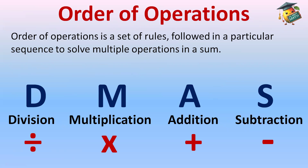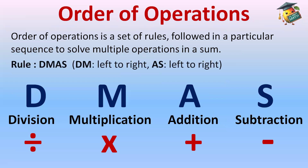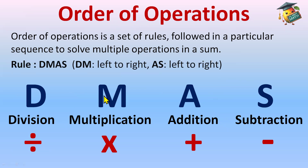In the DMAS rule, DM is solved before AS — that is, division and multiplication are solved before addition and subtraction. In division and multiplication, they are solved from left to right: whichever operation comes first on the left side, we solve that first. Likewise, in addition and subtraction, whatever comes first on the left side is solved first, but division and multiplication are always solved before addition and subtraction.